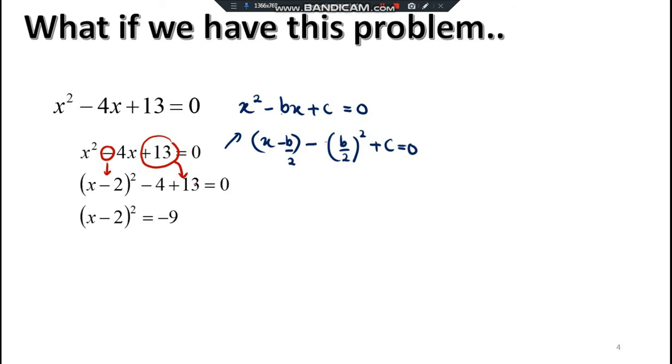So what will happen is you bring 13 minus 4, that should be 9, right? Bring it to the right, you would have negative 9. So for the next one we would have (x - 2)² = -9. I mentioned to you, please familiarize with this symbol because we're going to call it square root.